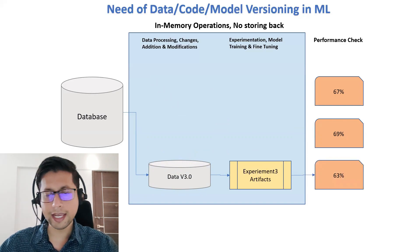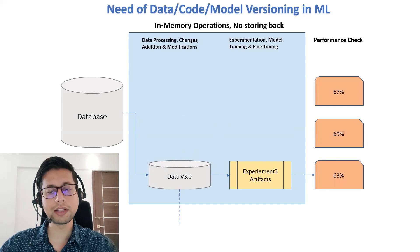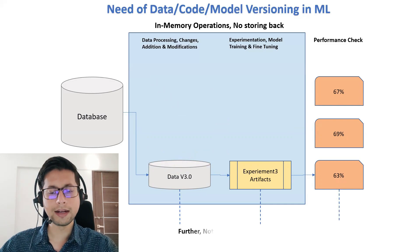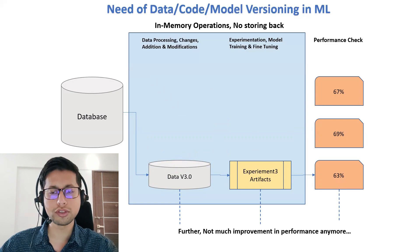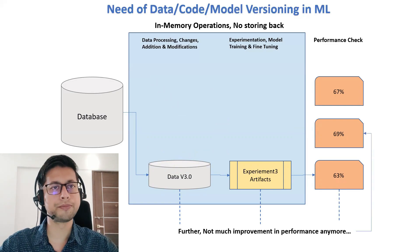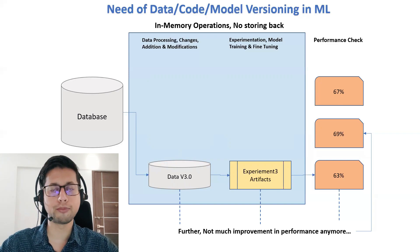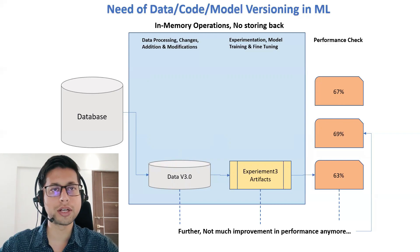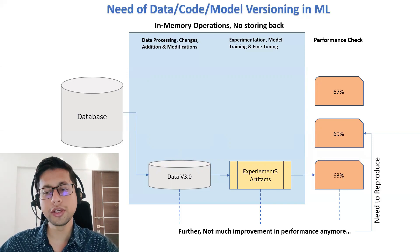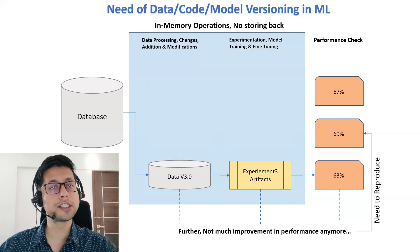We run experiment 3 and get 63% accuracy. We keep generating newer versions of data and newer experimentations, but at some stage we observe no further improvement in model performance. At that point, we want to go back to the experiment that gave optimal — the highest — performance among all these models. The challenge is we have not stored any version of the data or any experimentation, so we cannot reproduce those results.